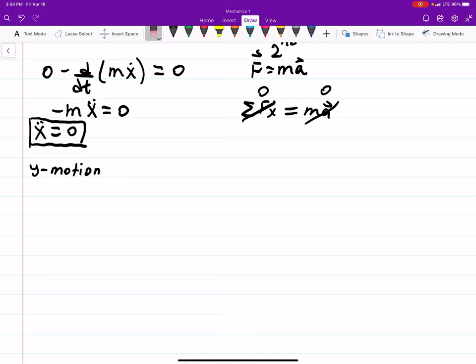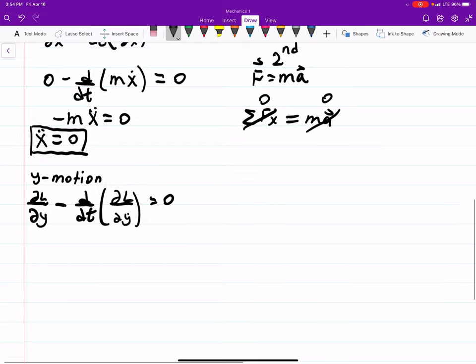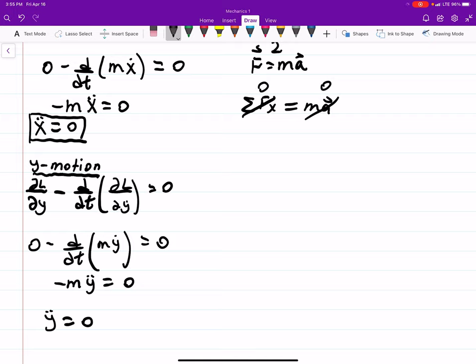So in the Y-motion, we're expecting this to also be zero, so I'm going to write down the Euler-Lagrangian, which is this equation. And same story, your potential is not a function of Y, and our kinetic isn't either. So this is zero. Minus D by DT of M, Y dot equals zero. And just for the same reason, that makes sense in the X-direction, it makes sense in the Y-direction.